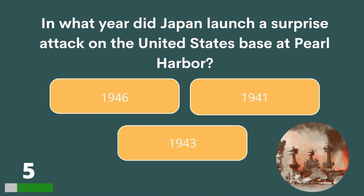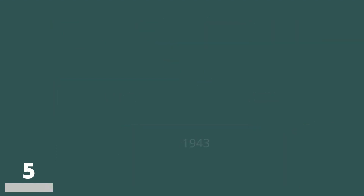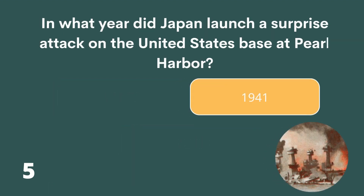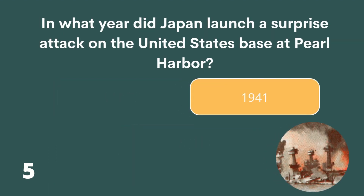In what year did Japan launch a surprise attack on the United States base at Pearl Harbor? 1946, 1941 or 1943? The answer is 1941.